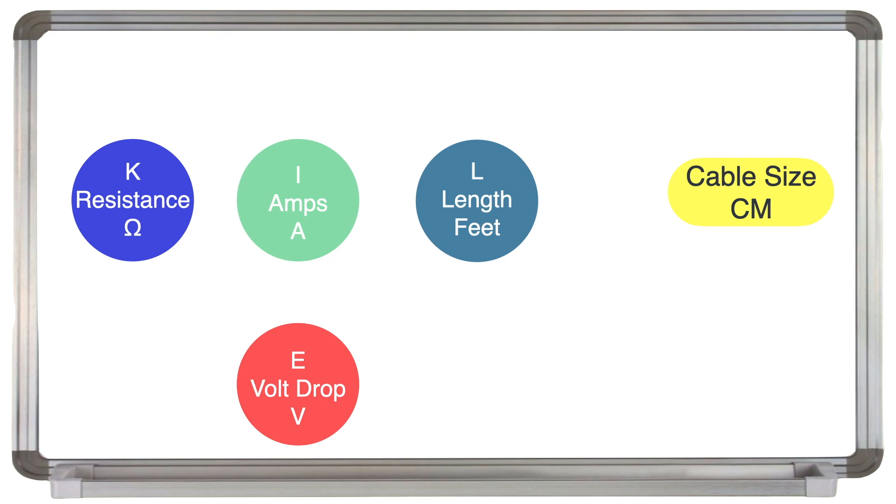K is a constant in this formula of 10.75 ohms. It never changes, as it's the resistance in ohms of a theoretical one foot strand of a one circ mil copper cable. So from now on, it will simply be referred to as K.